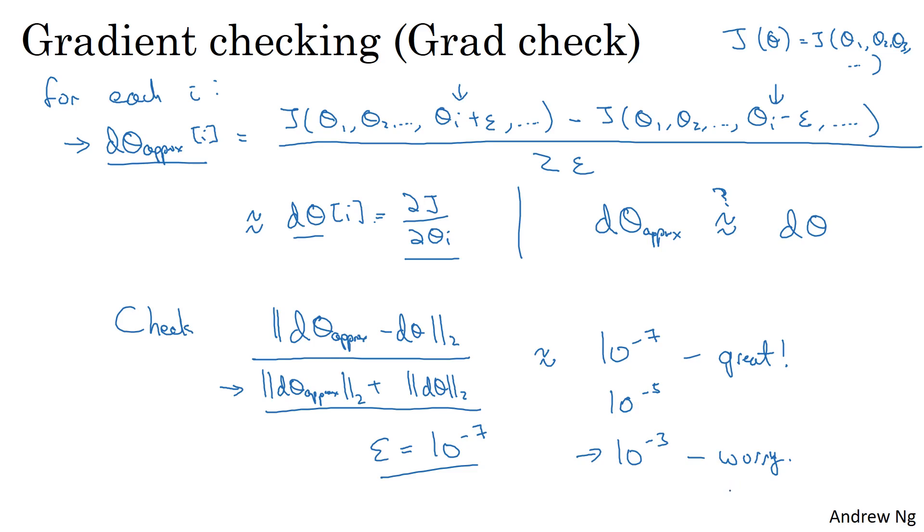And I would then look at the individual components of theta to see if there's a specific value of i for which d theta prox i is very different from d theta i, and use that to try to track down whether or not some of your derivative computations might be incorrect. And after some amount of debugging, if finally it ends up being this kind of very small value, then you probably have a correct implementation.